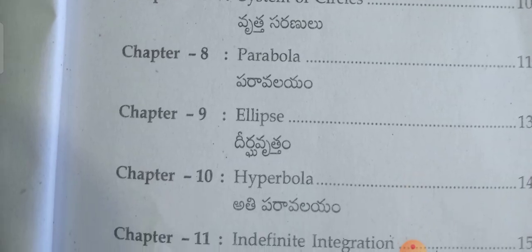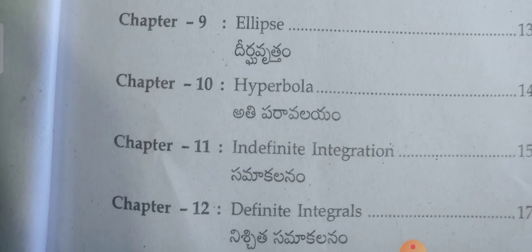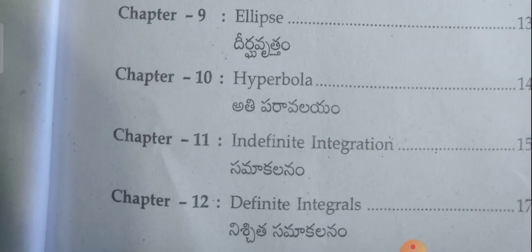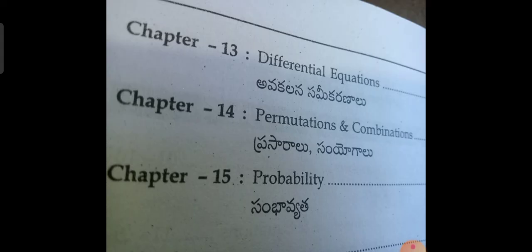Parabola paravalayam, ellipse dheerka vruttam, hyperbola ati paravalayam, indefinite integration sama kalanam, indefinite integrals nitschita sama kalanam, chapter 13 differential equations avakalna sami karanalu, permutations and combinations prasaralu samyogalu, chapter 15 probability samabhyata. So these are the 15 chapters are there for the bridge course second year students in the subject of mathematics.